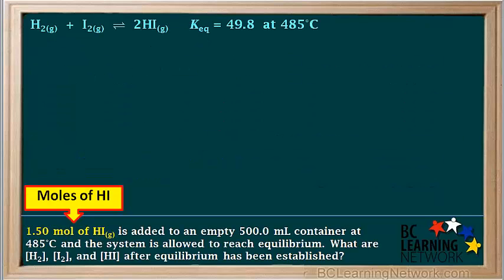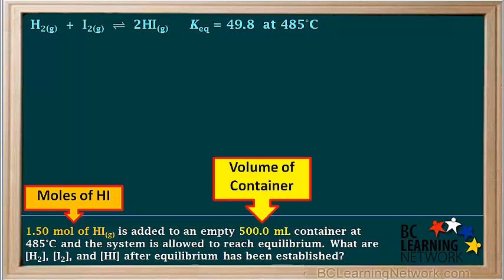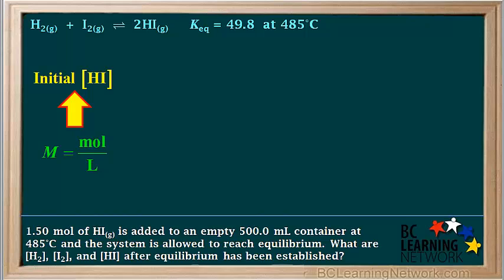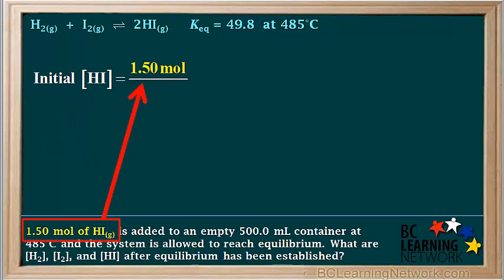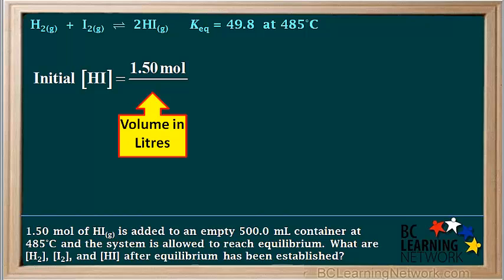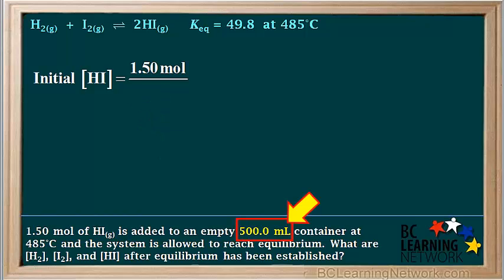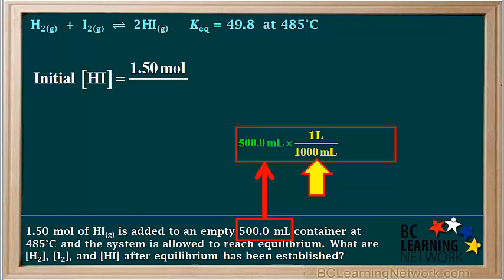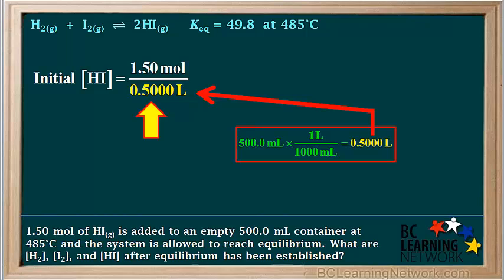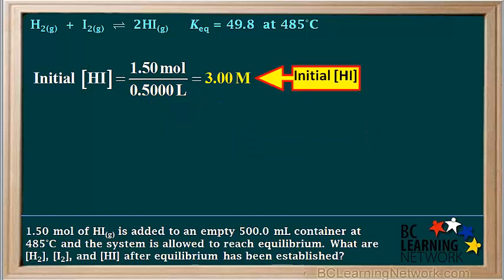Notice we're given moles of HI rather than concentration, and we're also given the volume of the container. Remembering that molar concentration equals moles divided by liters, we calculate the initial concentration of HI: 1.5 moles divided by 500 milliliters, converted to 0.5000 liters, which gives us 3.00 moles per liter, or 3.00 molar.